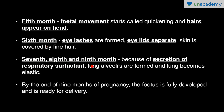In the seventh, eighth and ninth months, because of secretion of respiratory surfactant, lung alveoli are formed and the lungs become elastic. By the end of nine months of pregnancy, the fetus is fully developed and is ready for delivery. So just remember in which month which development is occurring.